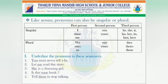Like nouns, pronouns can also be singular or plural. The first person singular pronouns are I, mine and me. The first person plural pronouns are we, ours and us. In second person, the pronouns 'you' and 'yours' are common both in singular as well as plural forms. The third person singular pronouns are he, she, it, his, her, its, him, hers. The third person plural pronouns are they, theirs and them.